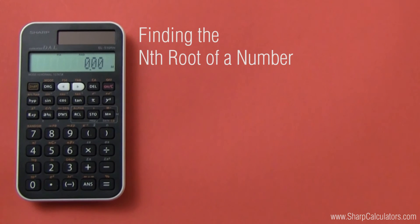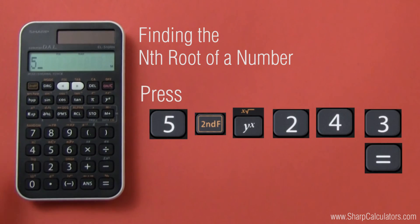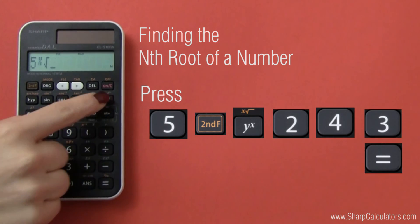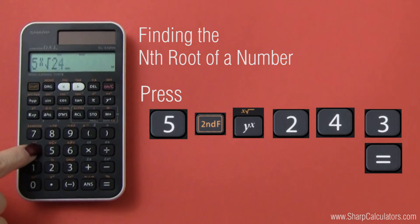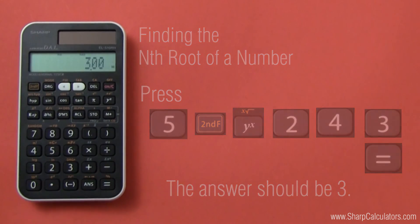Finding the nth root is simple too. For our example, we are finding the fifth root of 243. You will need to press 5, second F, yx, 2, 4, 3, and equals. The answer should be 3.